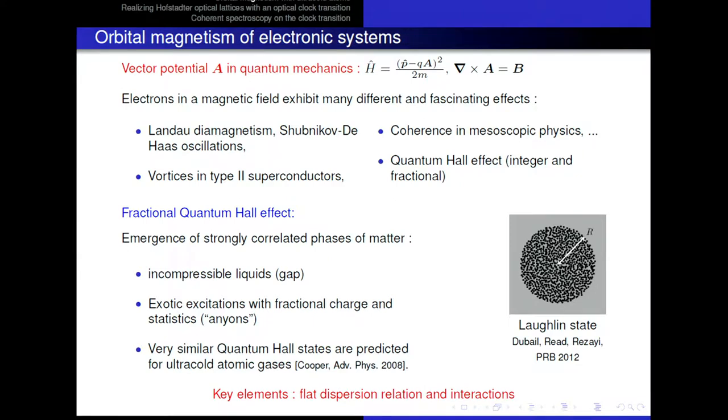the fractional quantum Hall states observed in electronic systems. But this is experimentally extremely difficult to realize, and so far there has been no observation of these states. And what I want to motivate here is how to basically realize this type of states within ultracold atoms. And so, the first thing that we need, the first ingredient that we need, is basically a vector potential coupling to the motion of the ultracold atoms in the same way a vector potential couples to the motion of electrons. And so, at first sight, it seems a bit lost.